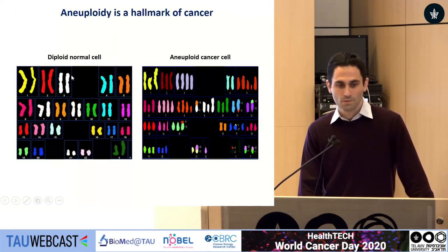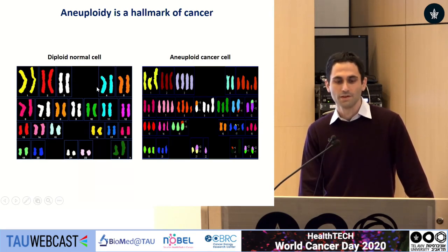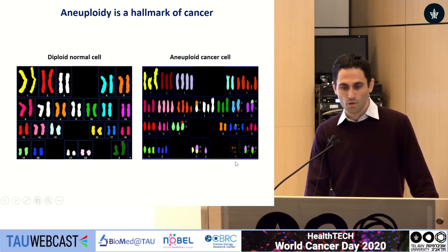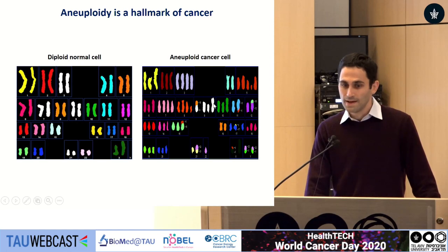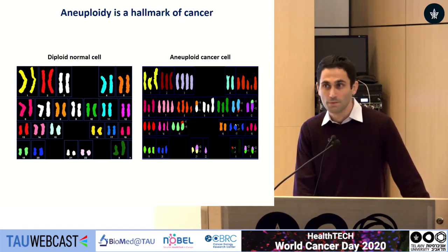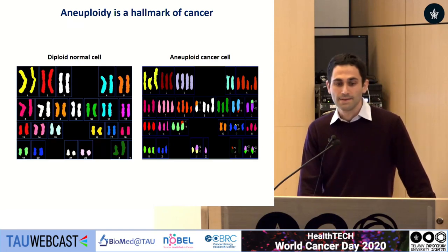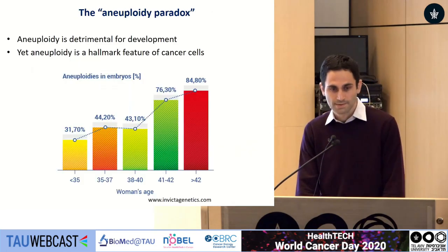In a normal diploid cell, we have two copies of each chromosome. However, aneuploid cells sometimes have three, four, or one copy — basically there is a chromosomal mess in these cells. This is very common: 90% of solid tumors and three quarters of hematologic malignancies display this phenomenon.